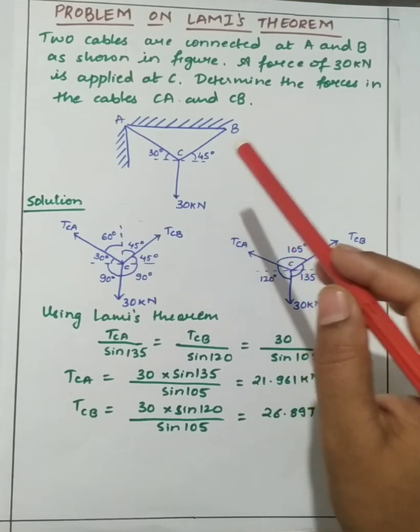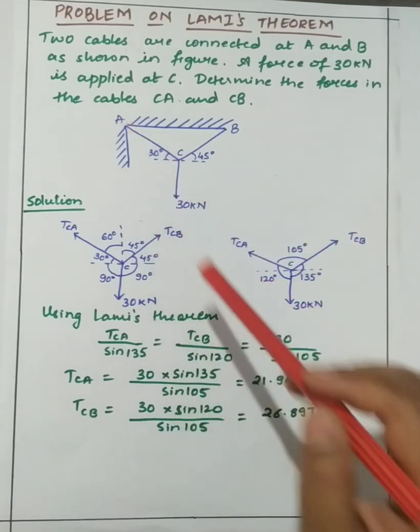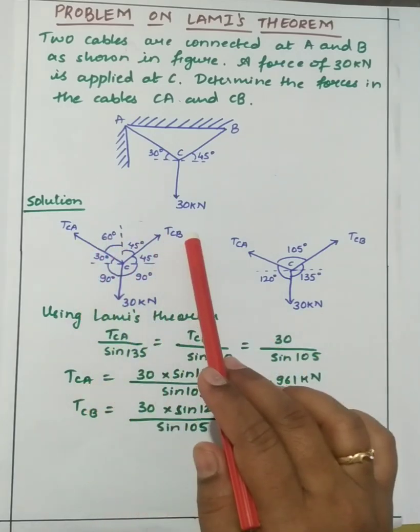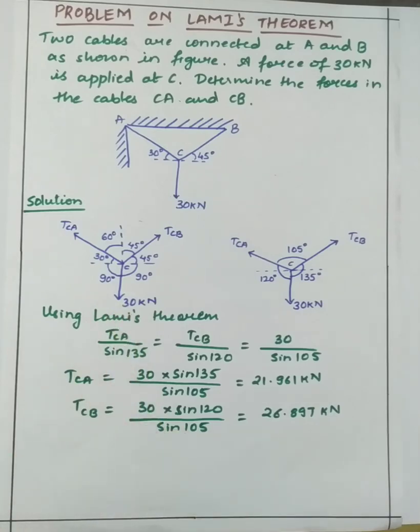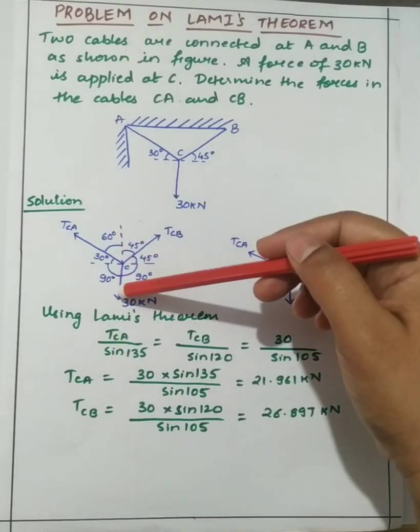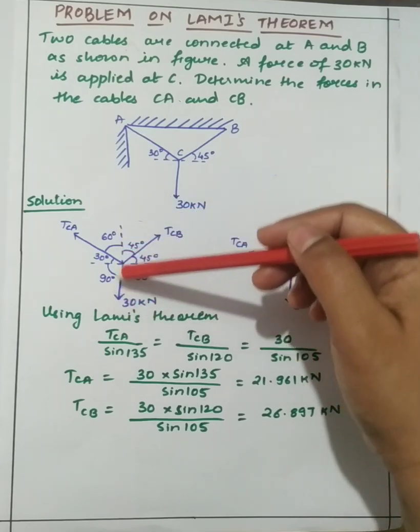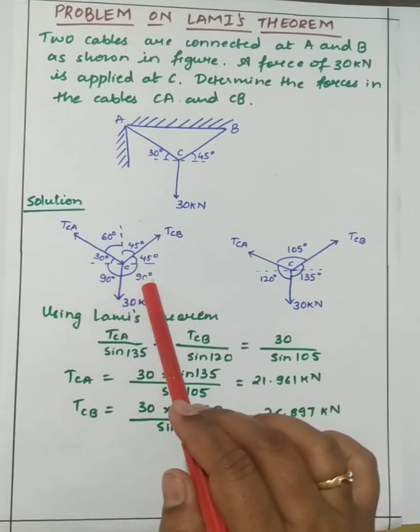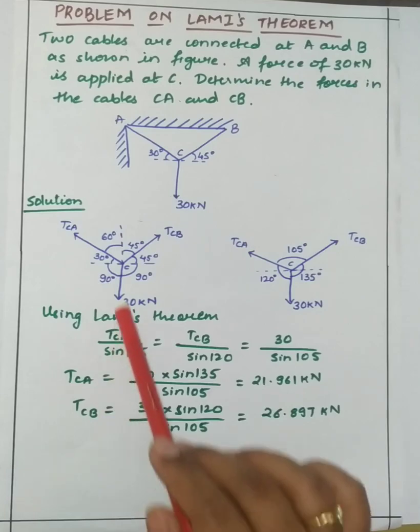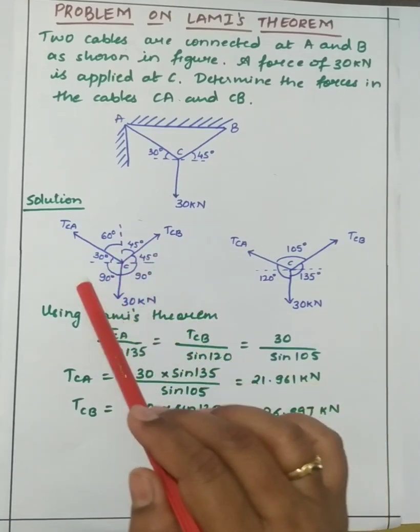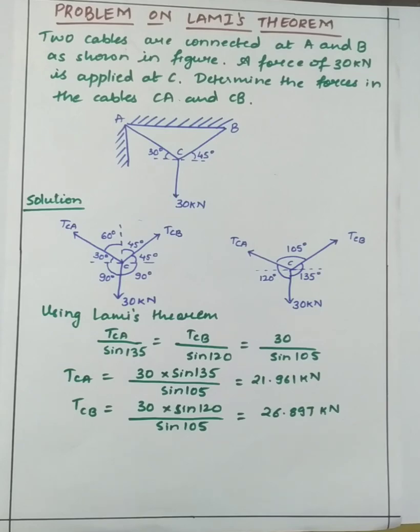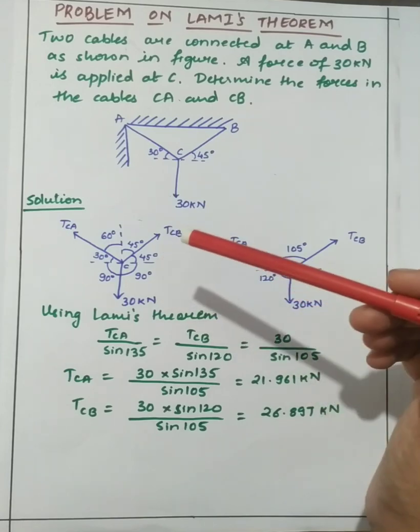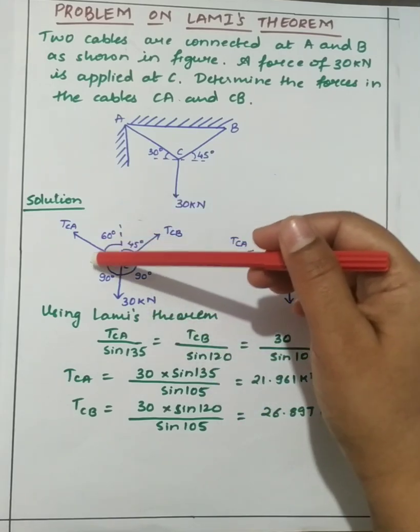Then here TCA, TCB and 30 kilo newton. This whole is 180 degrees, this straight line. Then horizontal line will be 90 degrees. This angle is given as 45 and 30. So total 180 minus 90 minus 45 we will get 45 degrees here.